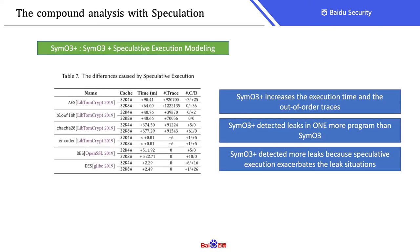We also consider CPU speculative execution and other speculative modeling in our out-of-order symbolic execution. We call it CMO3+. We evaluate CMO3+ and compare the results against the original CMO3. Our results show that CMO3+ detected one more leaky program than the original CMO3. The average analysis time in CMO3+ increases about 3 hours for each leaky benchmark, and CMO3+ detected much more leaks than the original CMO3, because the speculative execution actually exacerbates the leaky situations.